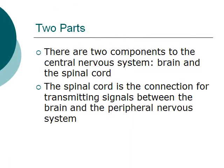There are generally two components to the central nervous system: the brain and the spinal cord. The brain speaks for itself in its function, whereas the spinal cord is the connection for transmitting signals between the brain and the peripheral nervous system.